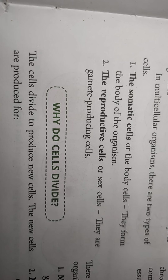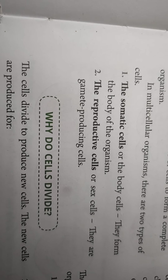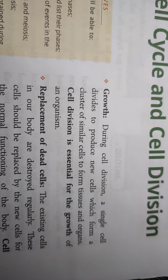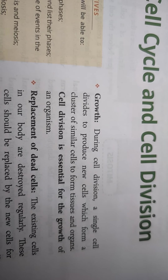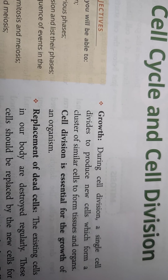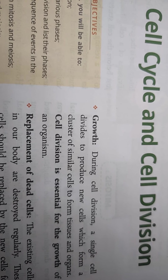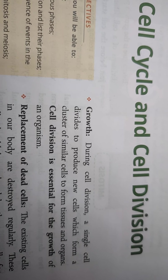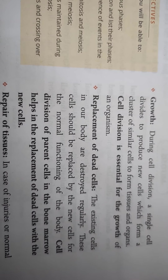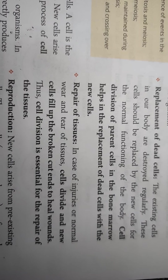Now, why do cells divide — what is the need for it? Cell division can be for growth, meaning the further development of the organism. In multicellular organisms, life begins with the zygote which divides and re-divides to form tissues, organs, organ systems, and then the organism. Cell division is also needed for the replacement of dead cells and repair of tissues.